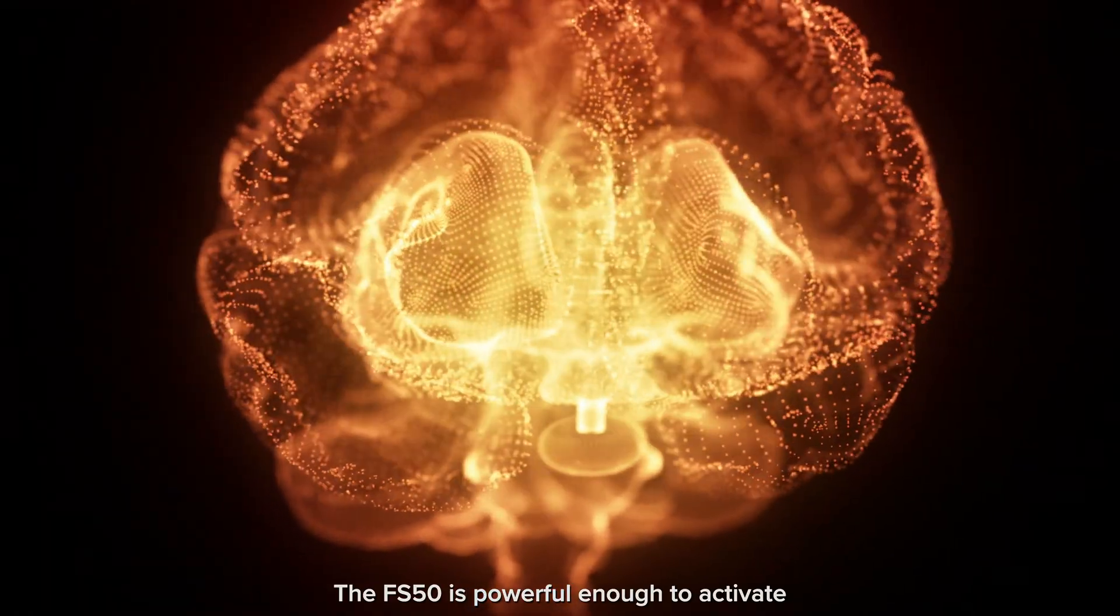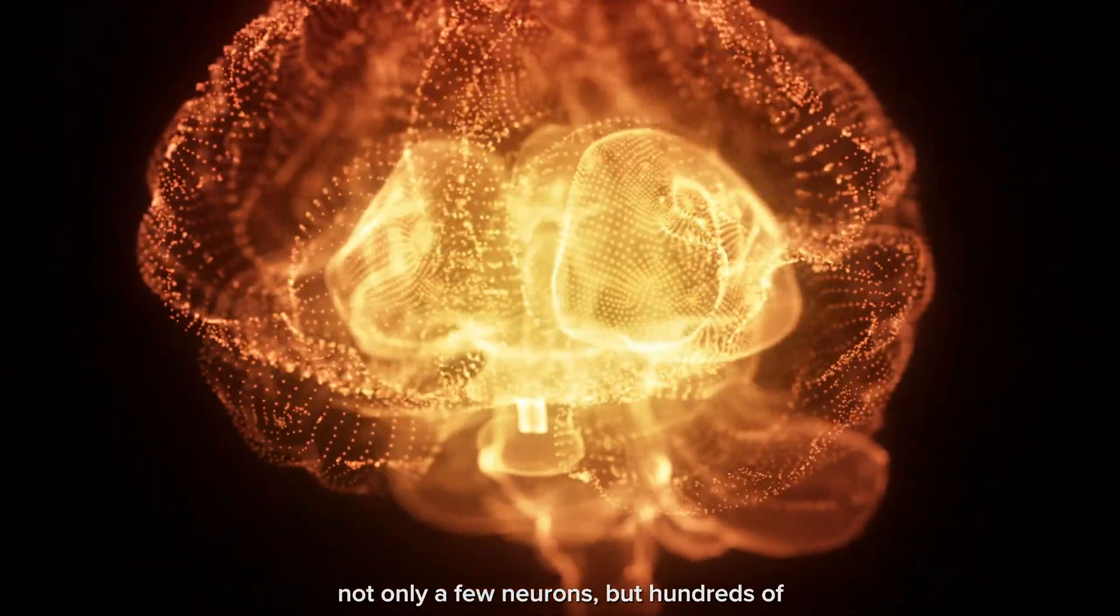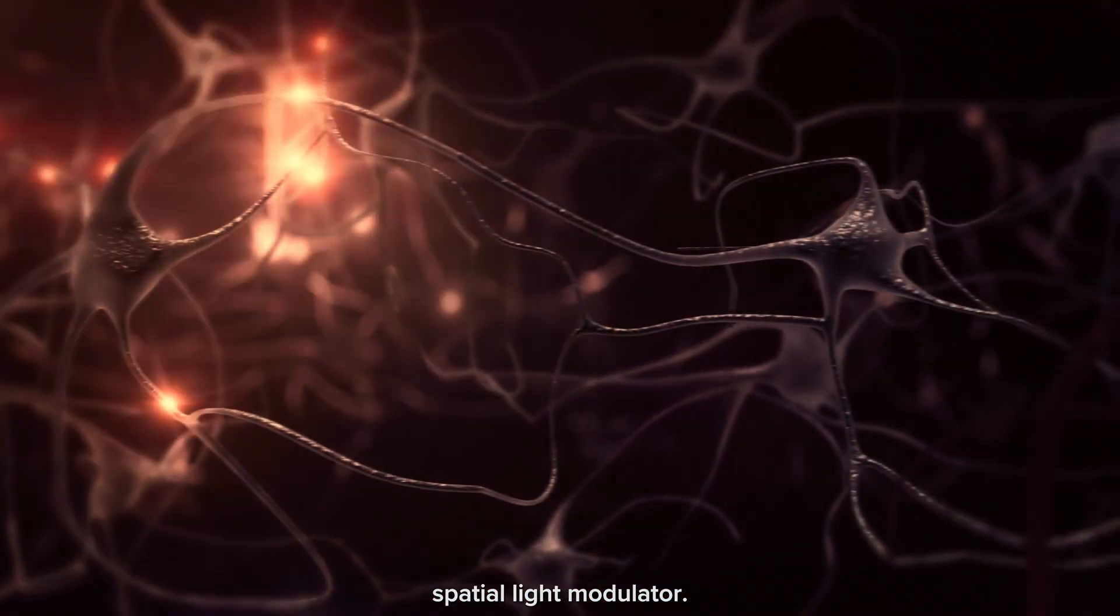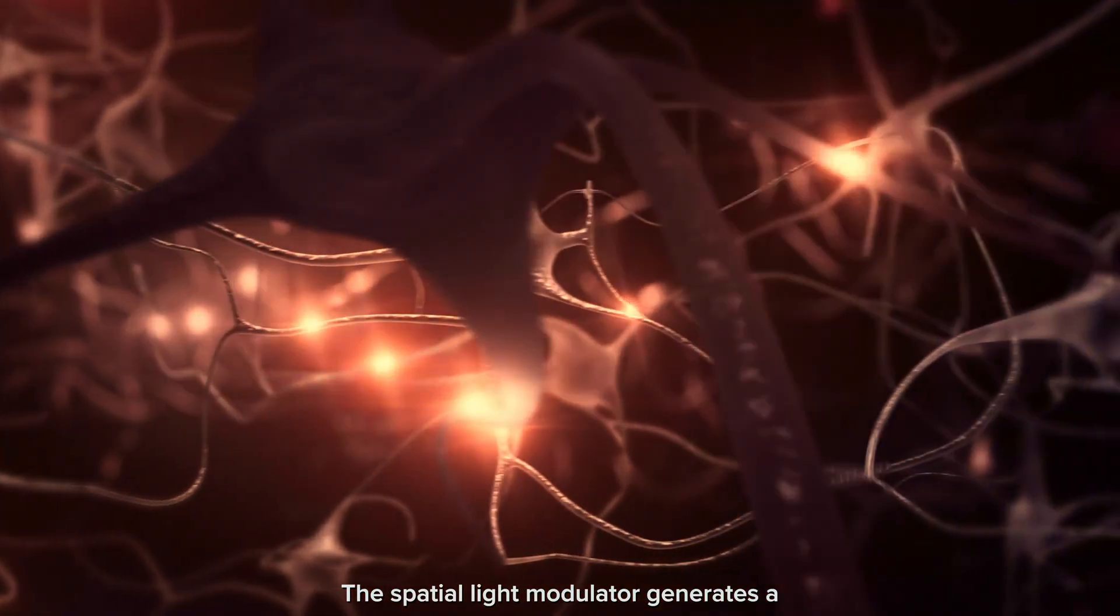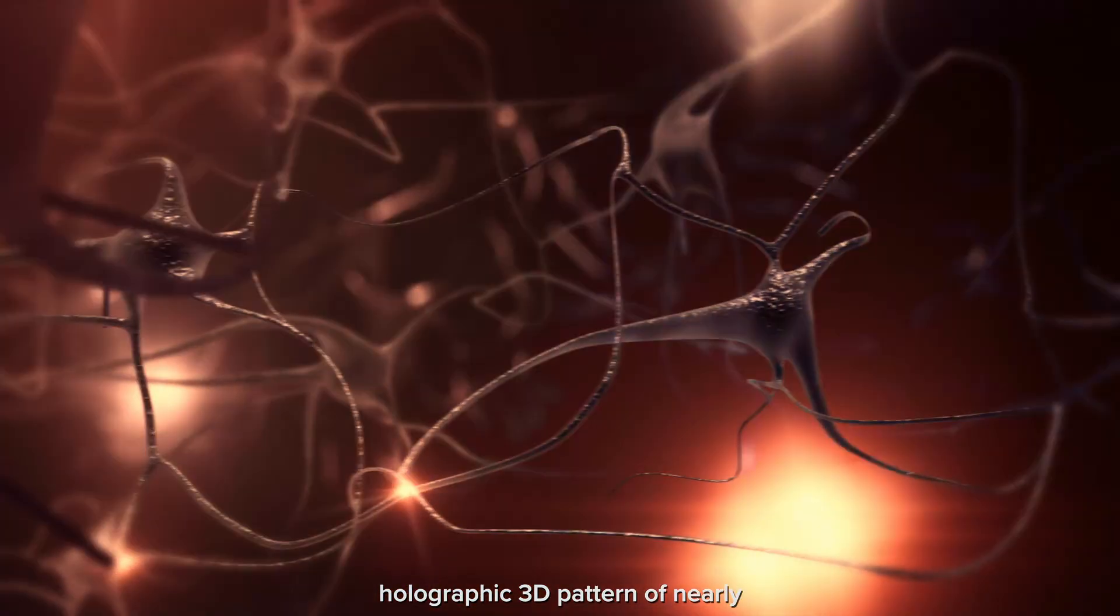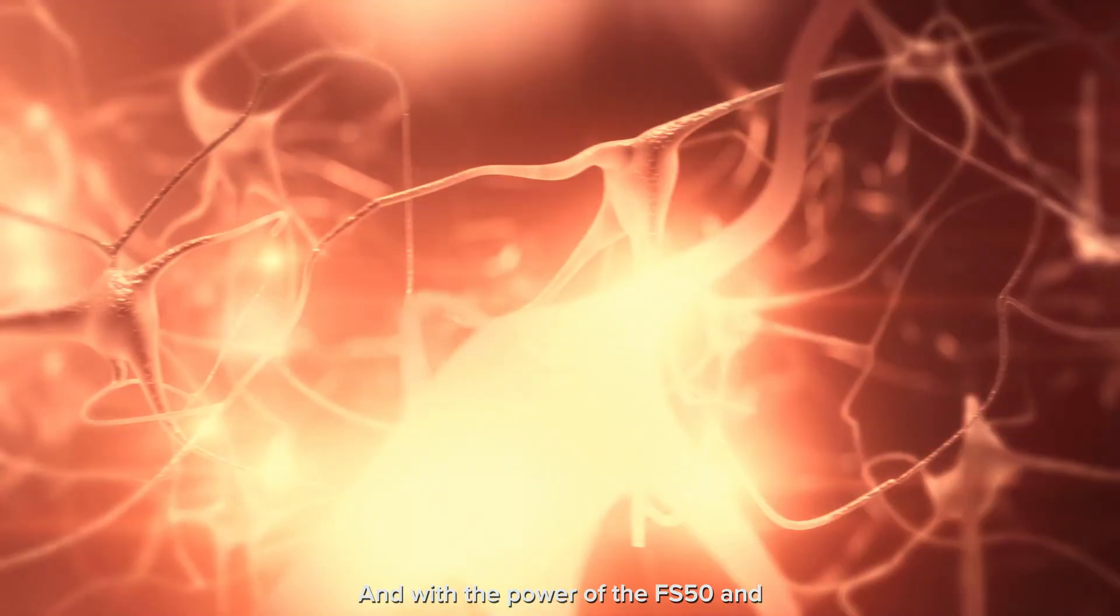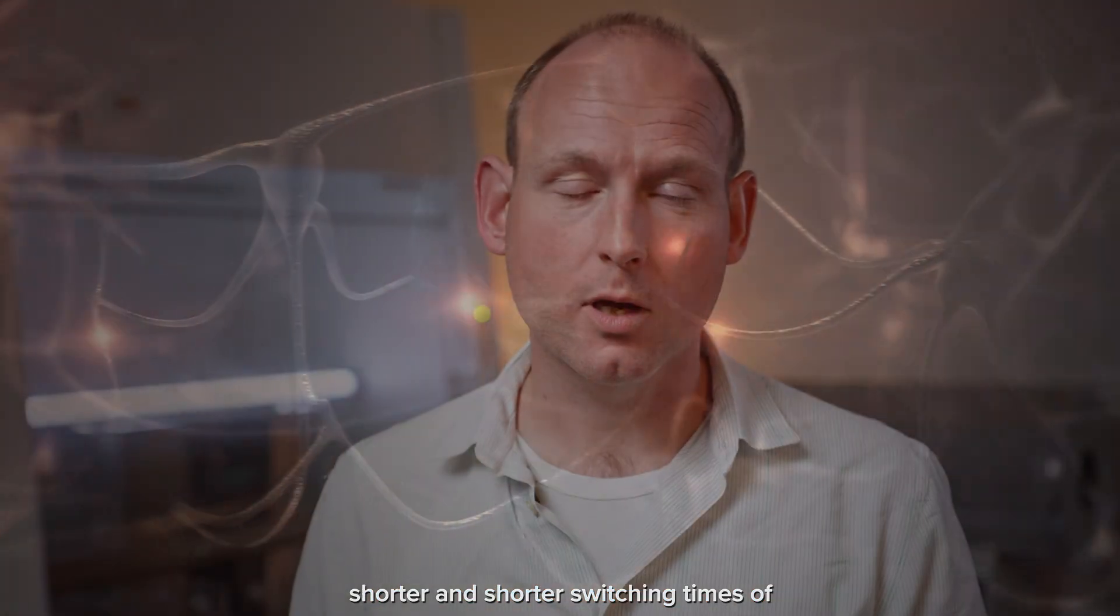The FS50 is powerful enough to activate not only a few neurons but hundreds of neurons in the brain by using a so-called spatial light modulator. The spatial light modulator generates a holographic 3D pattern of nearly diffraction-limited or soma-sized spots in the brain. And with the power of the FS50 and shorter and shorter switching times of spatial light modulators, you have the ability to replicate naturalistic sequences involving multiple neurons in the brain.